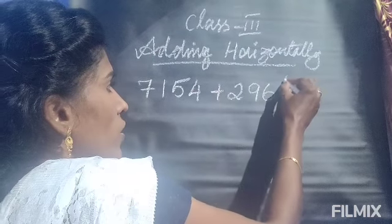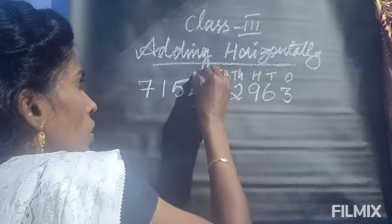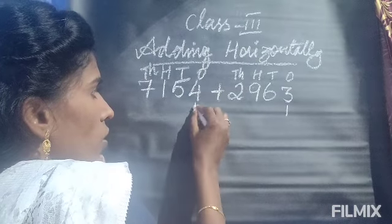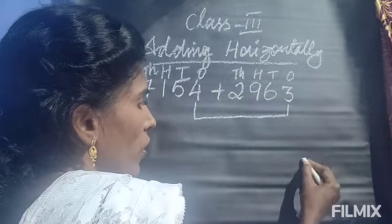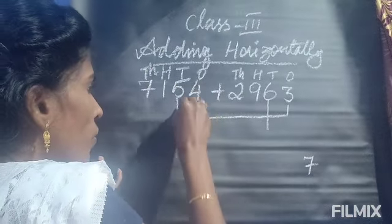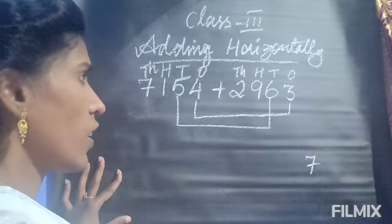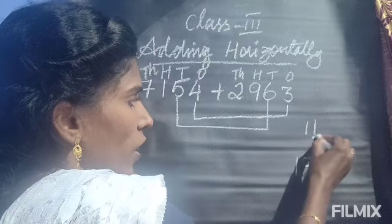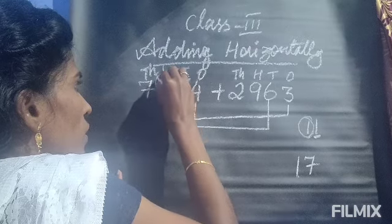First, let's mark the digits here — ones, tens, hundreds, and thousands. Now we are adding the ones: 4 plus 3 is 7. Write 7 in the ones place. Now the tens place — here 6 and here 5. So 5 plus 6 gives us 11. We cannot write 11 here, so only the right-side digit — 1 — we write here, and the left-side 1 we carry to the hundreds place.